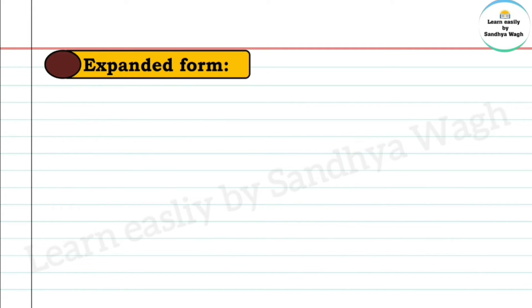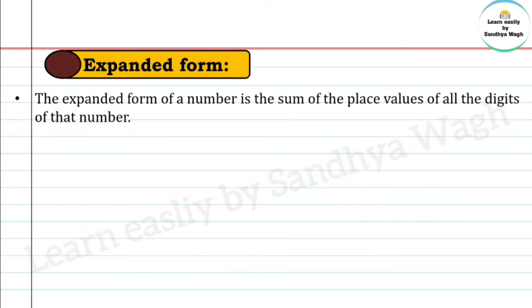Now let's learn expanded form. The expanded form of a number is the sum of the place values of all the digits of that number.